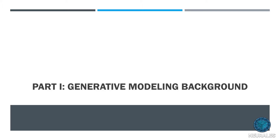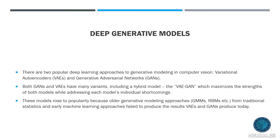Part one: generative modeling background. There are two popular deep learning approaches to generative modeling today, specifically in computer vision. They are variational auto-encoders and generative adversarial networks, or GANs. These two have many variants, and there's even a hybrid model called the VAE-GAN which maximizes the strengths of both. Traditional approaches like Gaussian mixture models and restricted Boltzmann machines failed to produce the results that VAEs and GANs produce today, which is why these are the most popular deep learning frameworks for generative modeling.